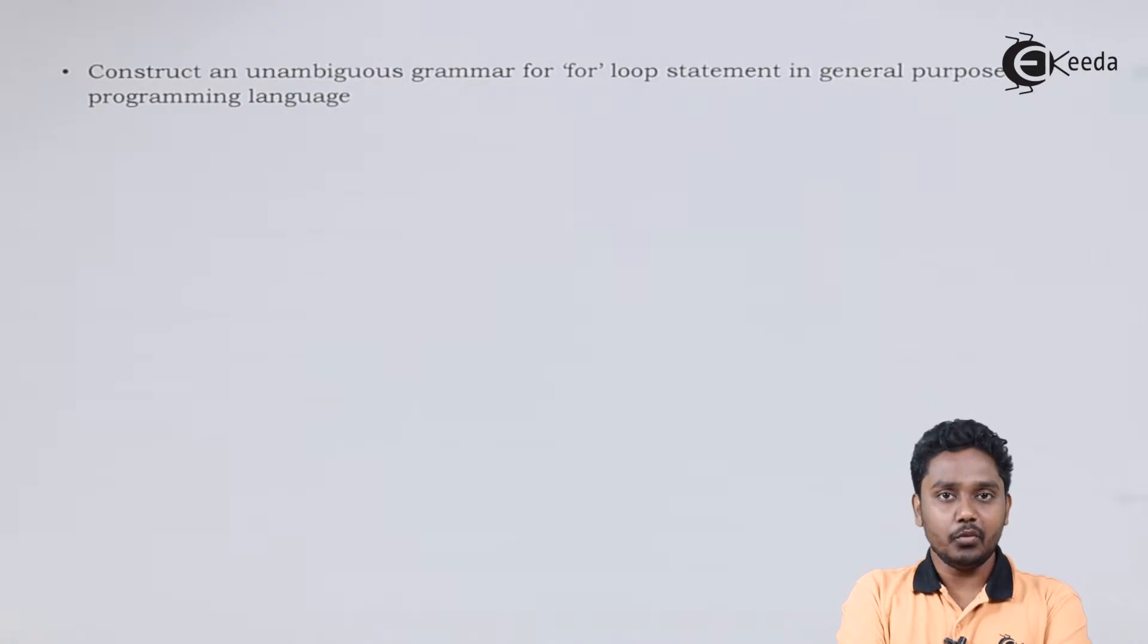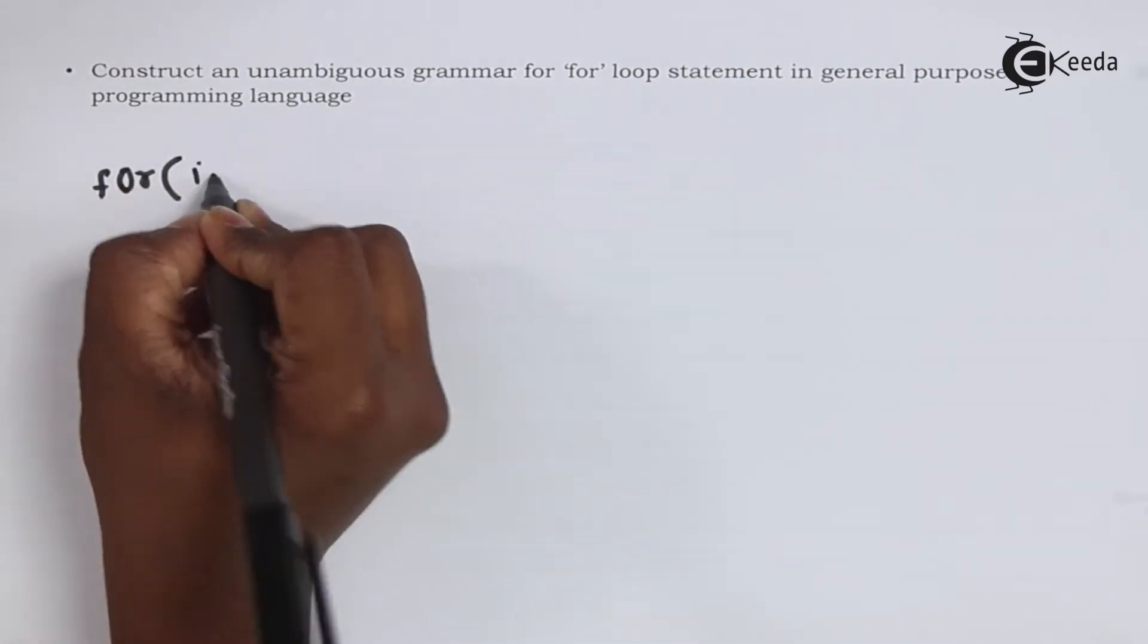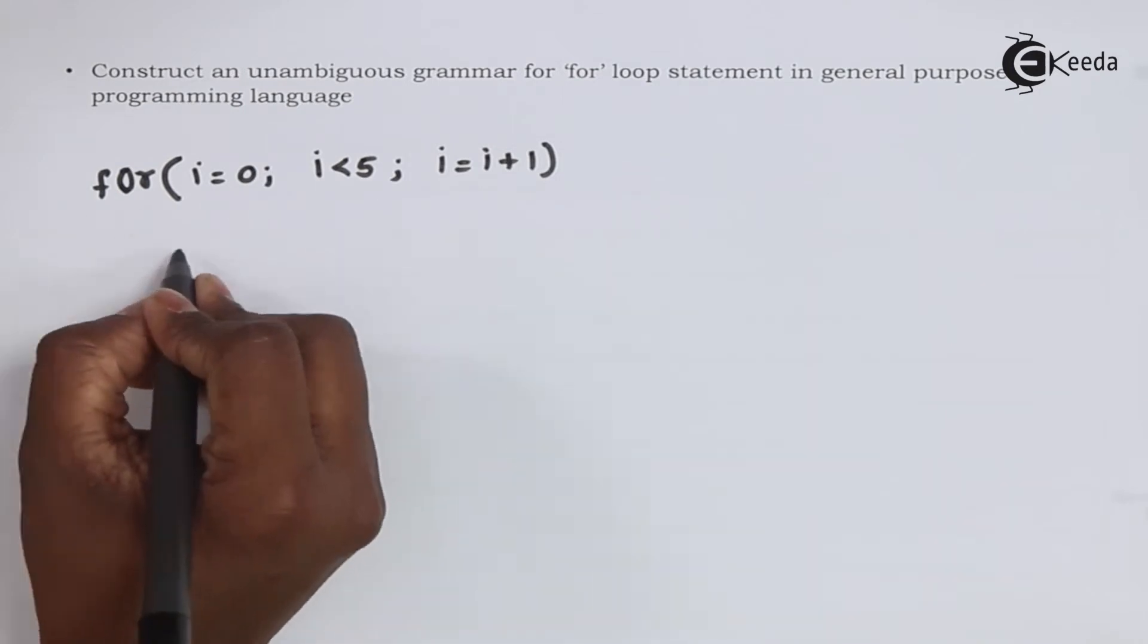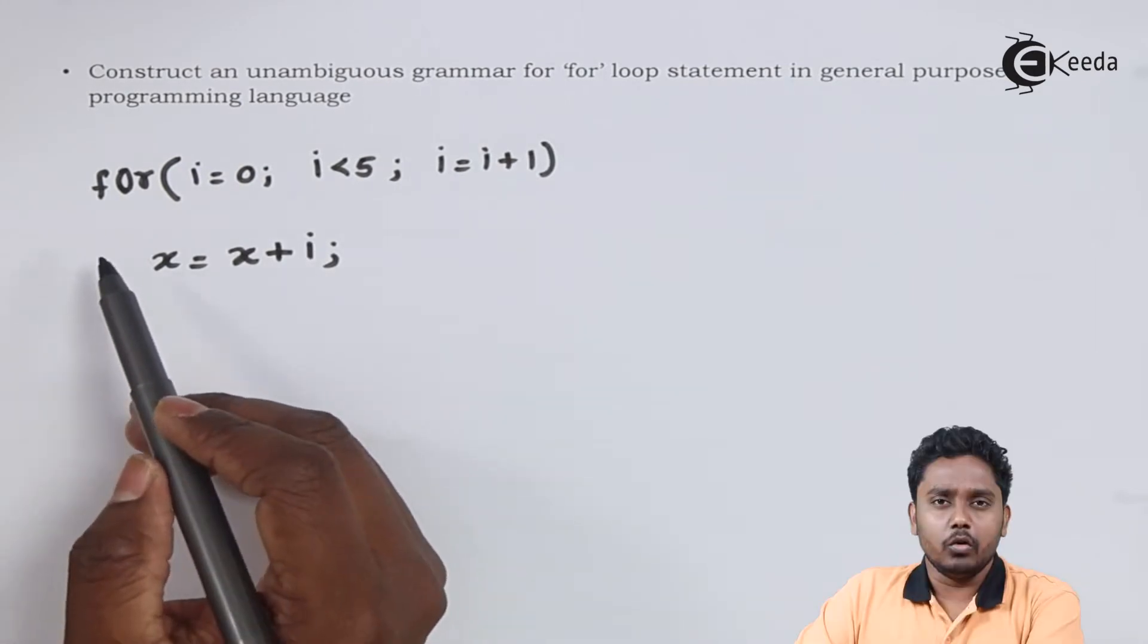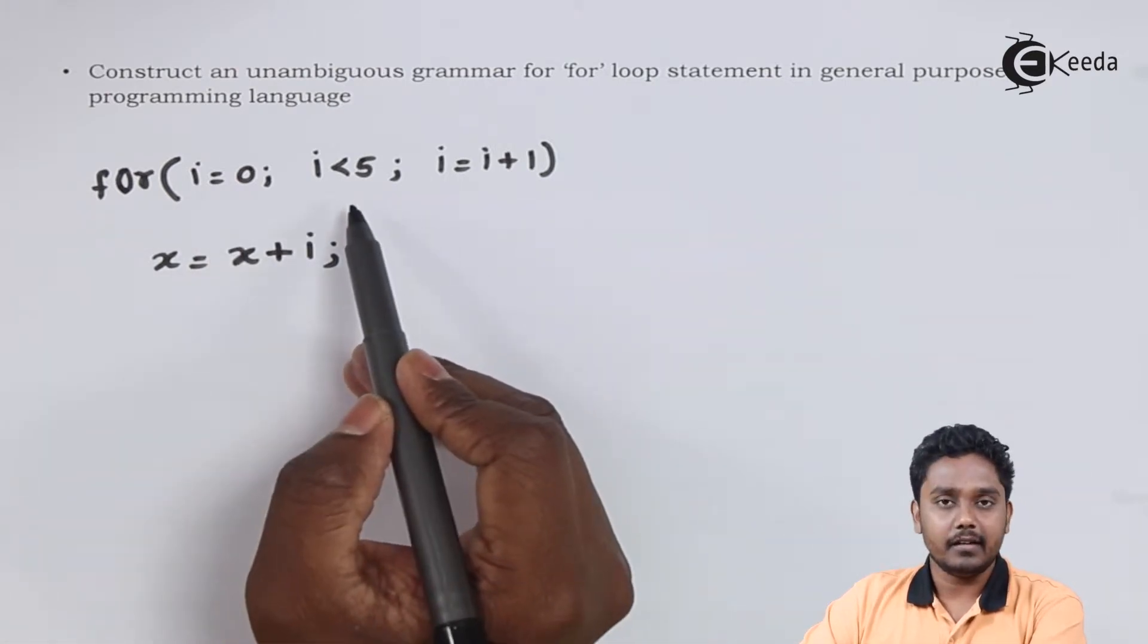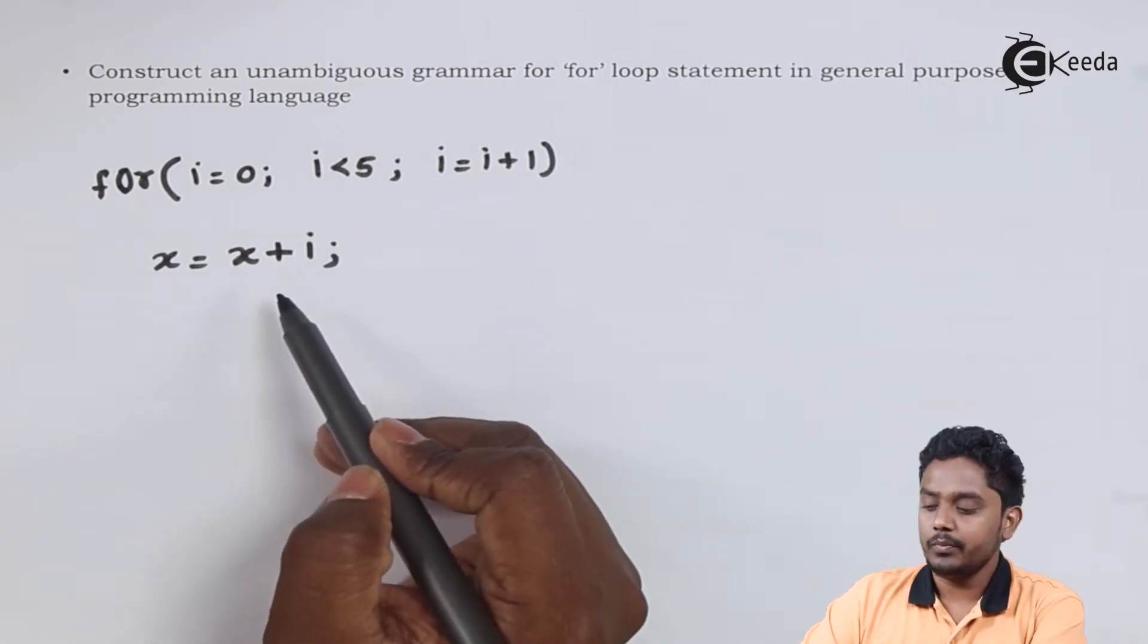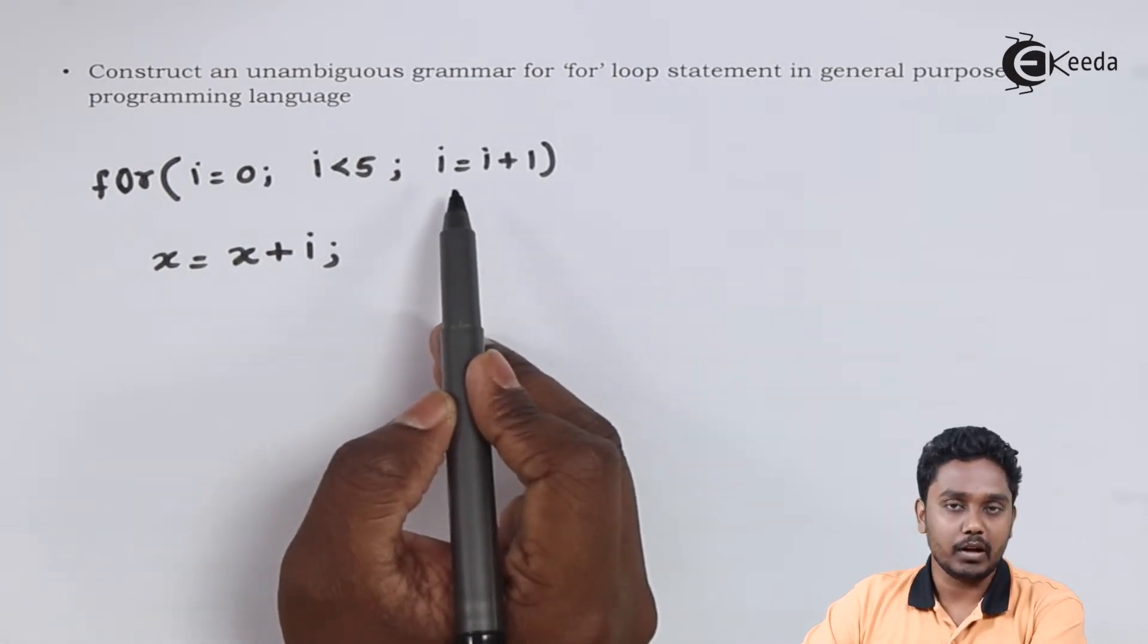First, let us try to discuss an example on for loop and how for loop executes. Over here we have taken a small example of for loop which is initializing using i is equal to 0. If i is less than 5, it will go for the execution of the statement x is equal to x plus i. After that, it will go for increment of i is equal to i plus 1.